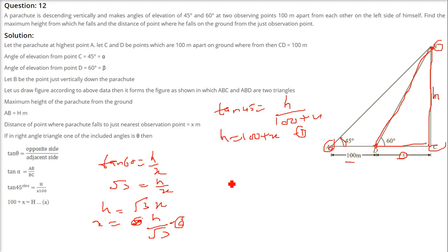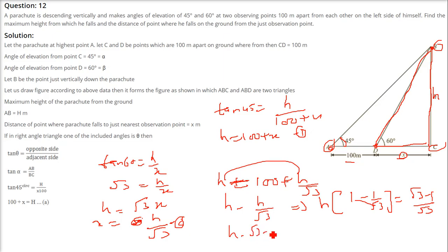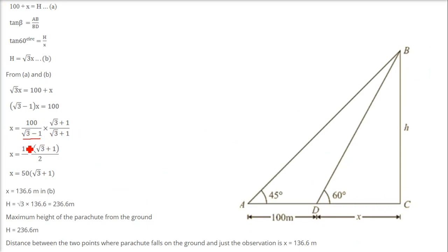Substituting X equals H divided by root 3 into the first equation: H equals 100 plus H divided by root 3. Rearranging: H minus H divided by root 3 equals 100, so H times (root 3 minus 1) divided by root 3 equals 100. Therefore H equals 100 root 3 divided by (root 3 minus 1). Rationalizing by multiplying by (root 3 plus 1): denominator becomes 2, so H equals 50 times (root 3 plus 1). You can substitute root 3 as 1.732 to get the decimal answer.